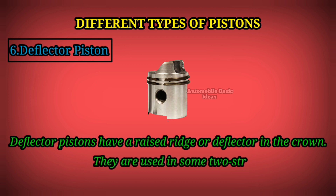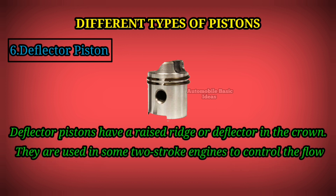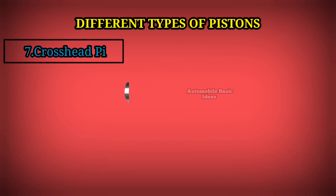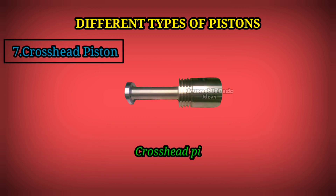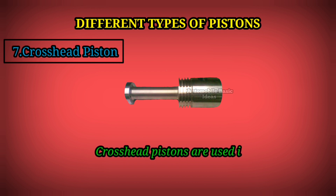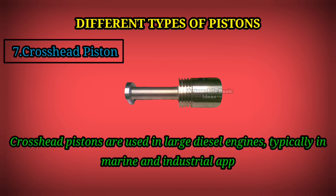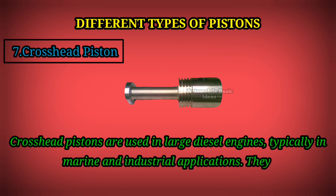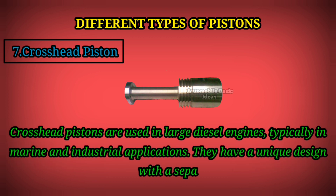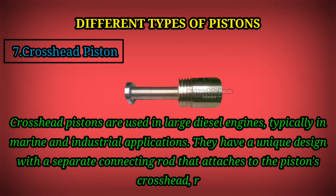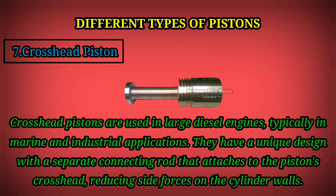Deflector piston: Deflector pistons have a raised ridge or deflector in the crown. They are used in some two-stroke engines to control the flow of the incoming air-fuel mixture and exhaust gases. Crosshead piston: Crosshead pistons are used in large diesel engines, typically in marine and industrial applications. They have a unique design with a separate connecting rod that attaches to the piston's crosshead, reducing side forces on the cylinder walls.